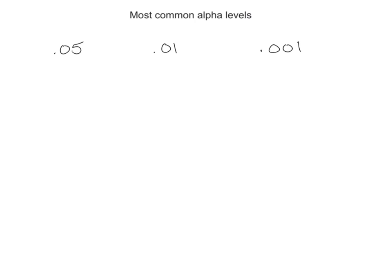So the most common alpha levels that you're going to see in scholastic journals or publication articles is going to be 0.05, 0.01, or 0.001.